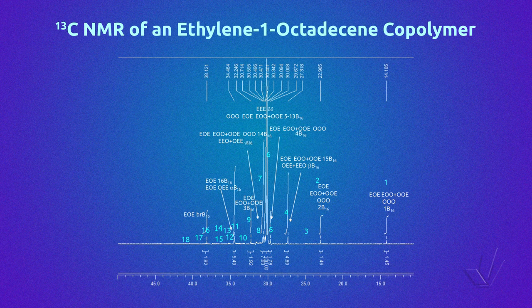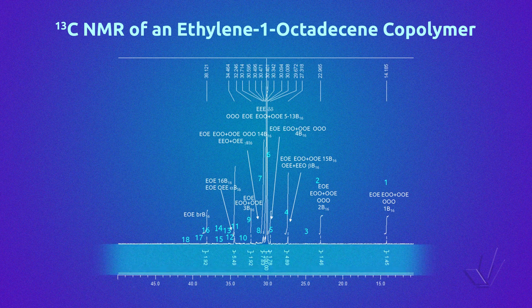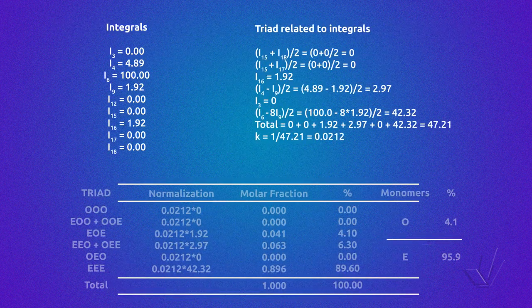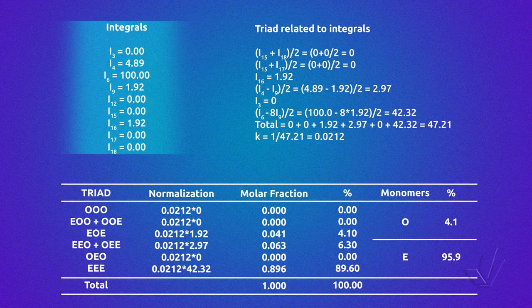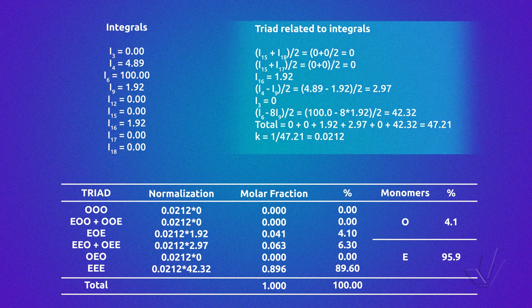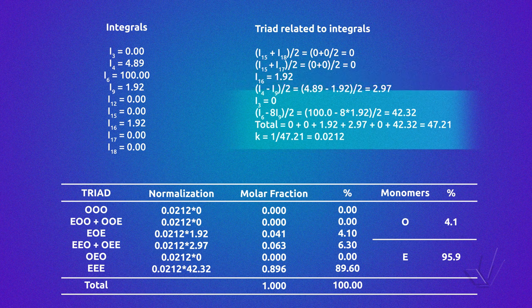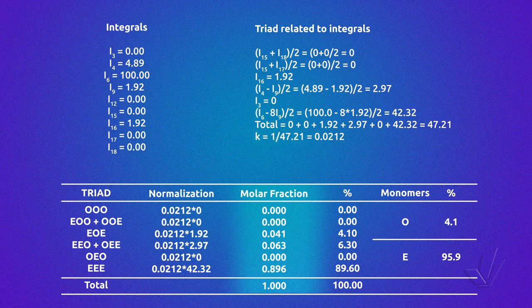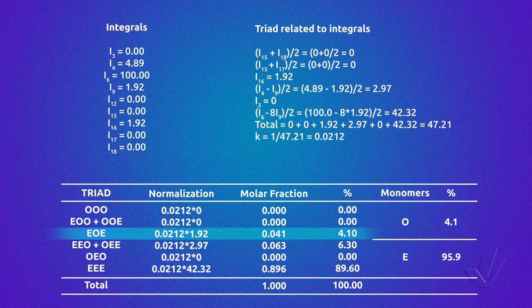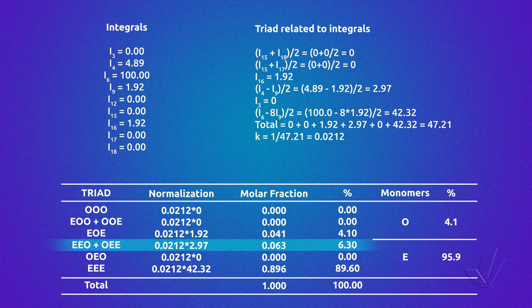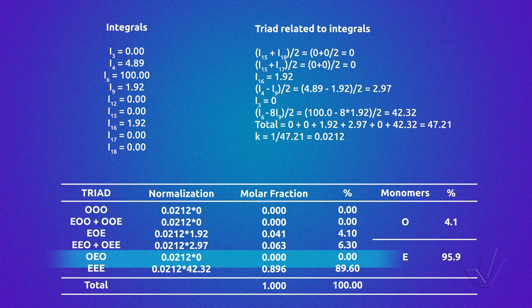Here we have an example of an ethylene-1-octadecene carbon-13 NMR spectrum. The 18 peaks of the table have been located at the positions of the possible peaks, shown in blue. As we can see, not all the peaks are present. We have the integral of each peak at the bottom of the spectrum. We take all the peak integrals needed according to the previous equations, then introduce the integral values in the triad equations, and normalize by adding all the values and multiplying by the normalization constant to obtain the triad percentages. This copolymer has 4.1% of triads E-O-E, 6.3% of triads E-E-O plus O-E-E, and 89.6% of triads E-E-E.